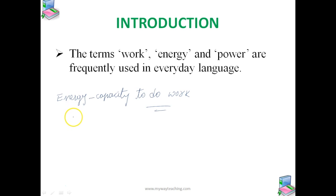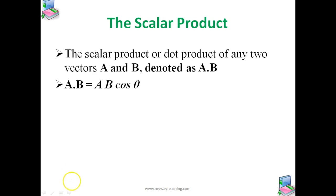First, we need to develop some mathematical prerequisites before studying all these concepts. We will study what is the scalar product of two vectors. We know about vectors — vectors are quantities which have both direction and magnitude, and scalars are quantities which have only magnitude without any direction. We already know how vectors are added and subtracted, so now let's see how the scalar product works.